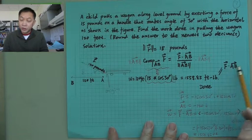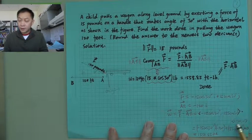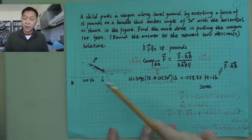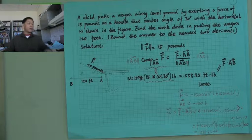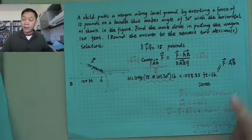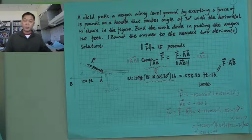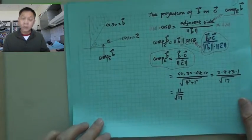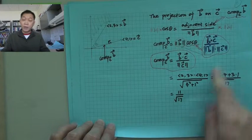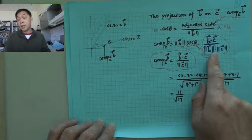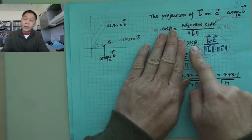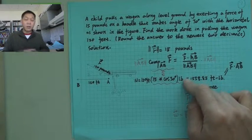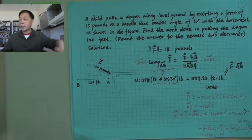If the vectors are already decomposed, this approach is easier and we can directly calculate the result. This is the application of the dot product in physics — it means the amount of work. It also illustrates the application of vector projection and how cosine theta is used in vector theory. This is a comprehensive application.